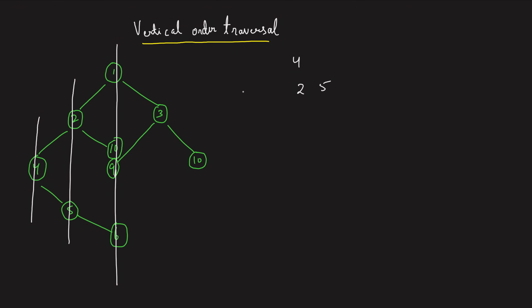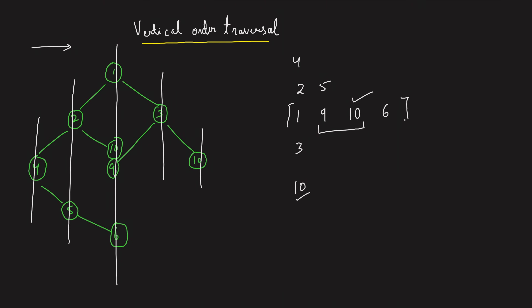Drawing the next line, one is first, and nine and ten are actually overlapping. If nodes are overlapping, make sure you write the smaller value first, then the greater value. After that we have six, then three, then ten. The key rules are: if nodes overlap, take the smaller one first; write verticals from left to right; and within a single vertical, write top to bottom.